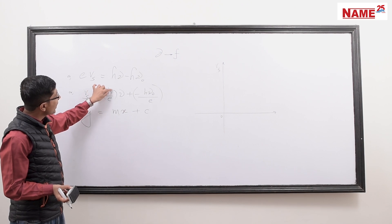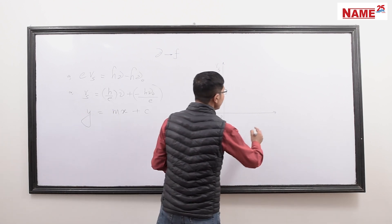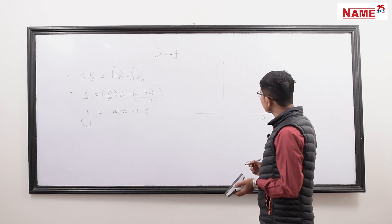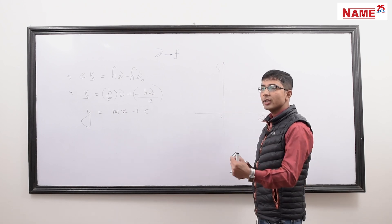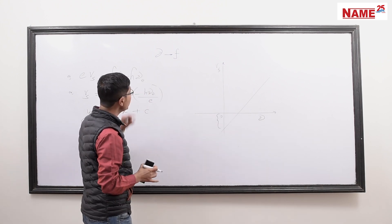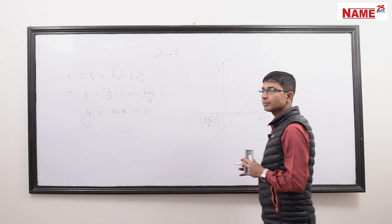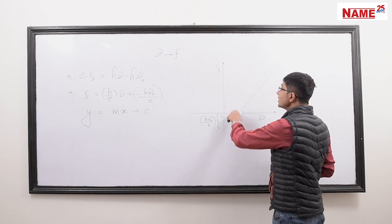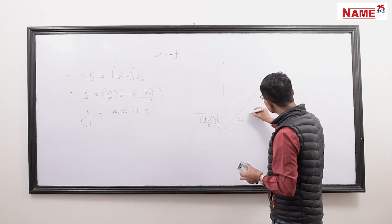The graph gives a straight line with a negative y-intercept. The x-intercept — where the line crosses the frequency axis — gives the threshold frequency ν₀. The slope of the graph is m = h/e = tan θ, where θ is the angle the line makes with the positive frequency axis. Therefore, h = e·tan θ. This is how Millikan verified Einstein's equation by experimentally obtaining the value of Planck's constant h = 6.62 × 10⁻³⁴ J·s.